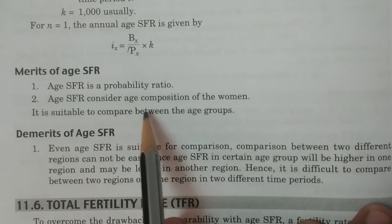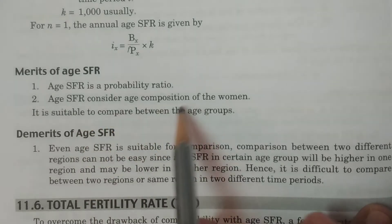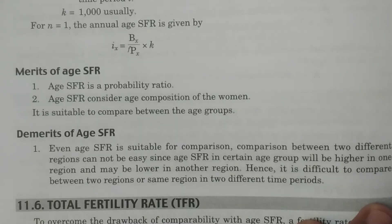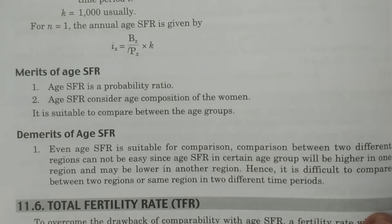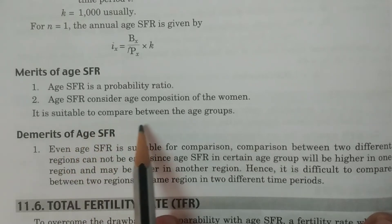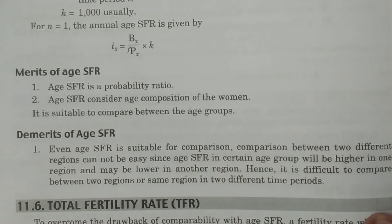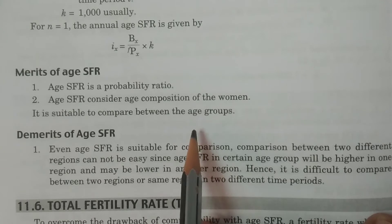Age SFR considers the age composition of the woman. Age specific fertility rate considers age composition — between any age group we can calculate this. Therefore it includes the age factor. That is one such good comparative study, and it is suitable for comparison between age groups. However, comparison can only be considered within the age factor.